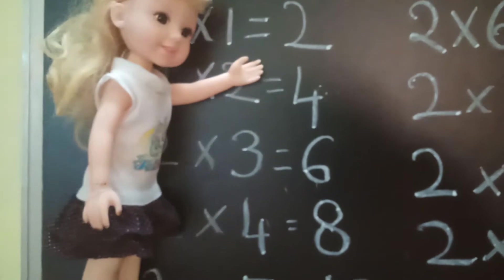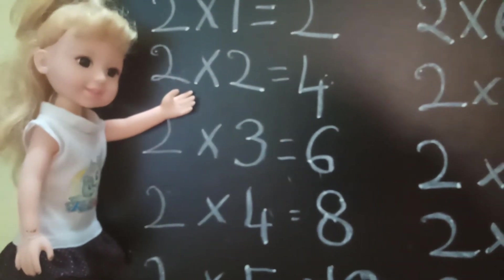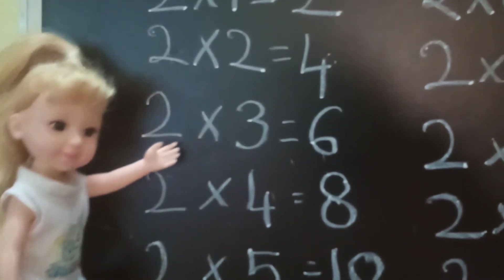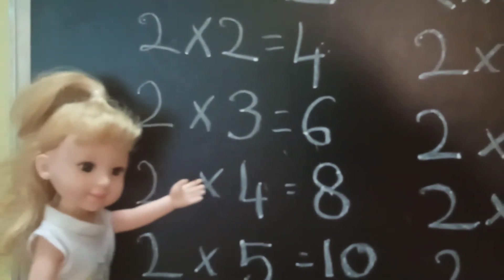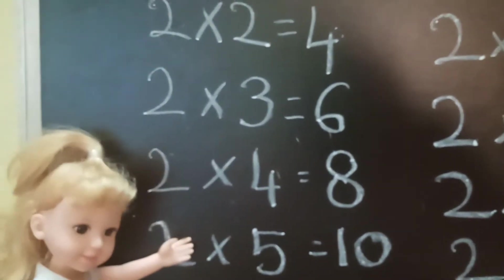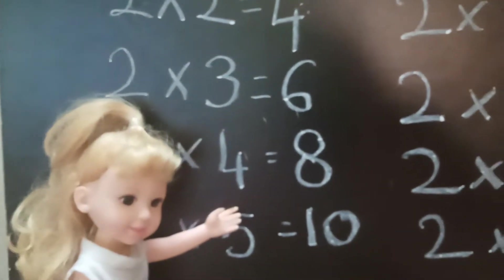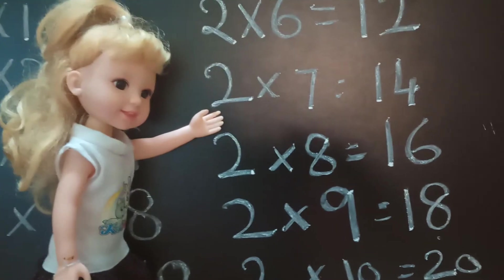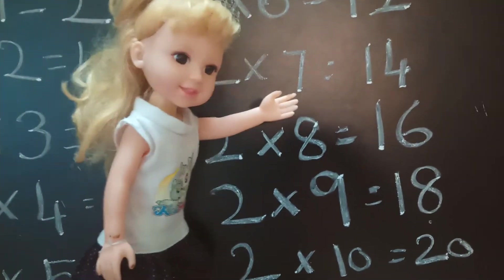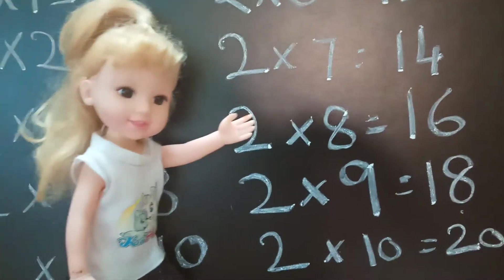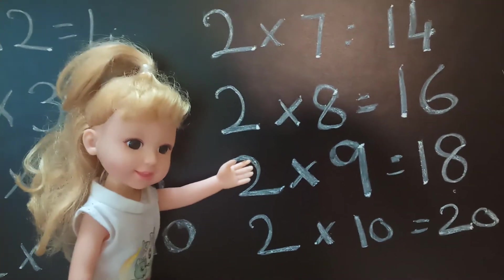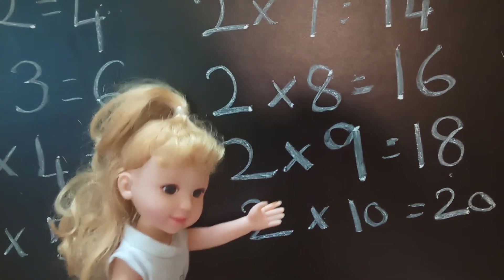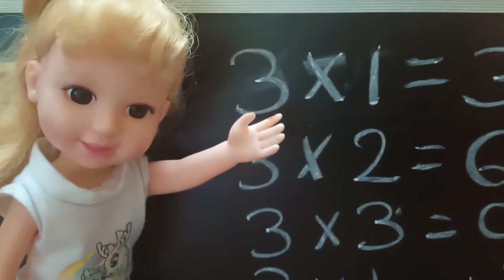2×1=2, 2×2=4, 2×3=6, 2×4=8, 2×5=10, 2×6=12, 2×7=14, 2×8=16, 2×9=18, 2×10=20.